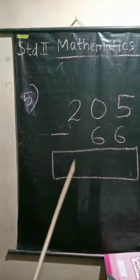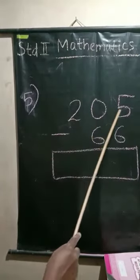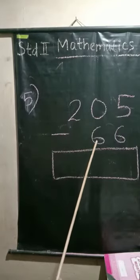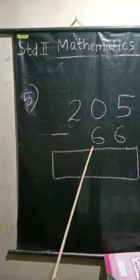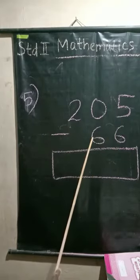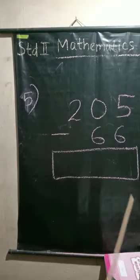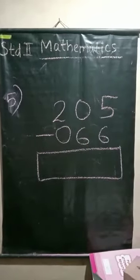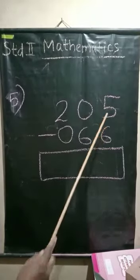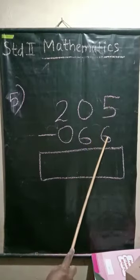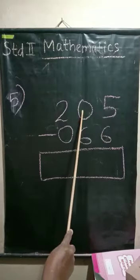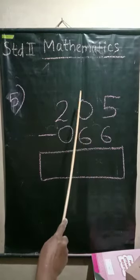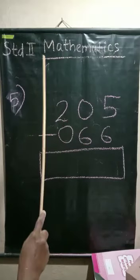Another question: 205 minus 66. Now subtract. Ones place digit, no key. Tens place, no key. Borrow 1 from the next place. We cannot borrow 1 from zero, so move to this place. Take 1 from here.